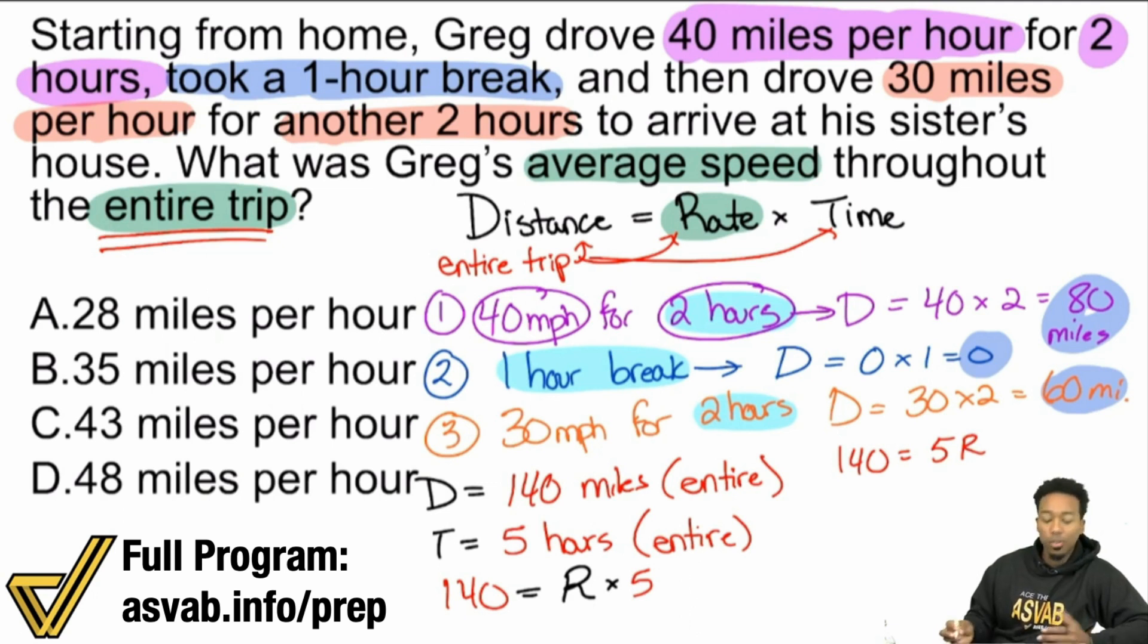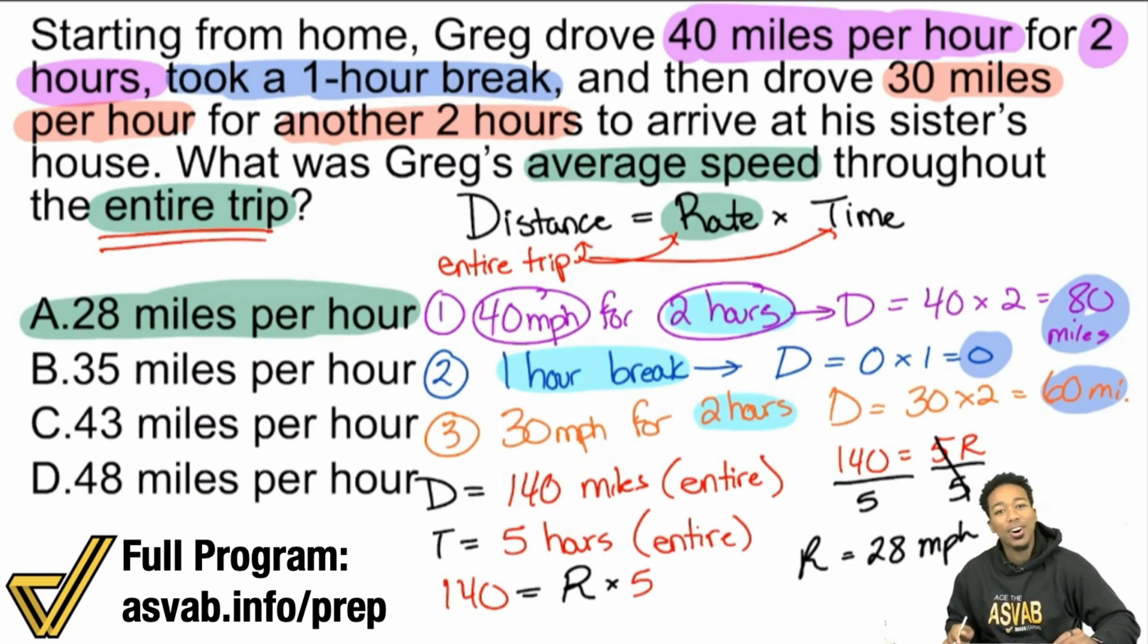All we have to do here is go ahead and divide both sides by five and we are good. So 140 divided by five, that's going to give us 28, 28 miles per hour once it's all said and done right there. And that's why the answer here is A. Booyah, we are all good.